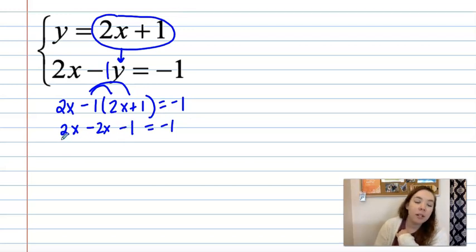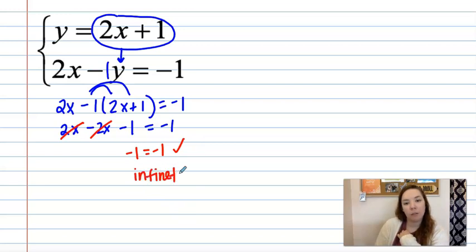Again 2x minus 2x is going to be 0. Those go away. But then we're left with negative 1 equals negative 1. That's true. That's a true statement. So we have infinitely many solutions. If I can spell infinite. Many solutions.